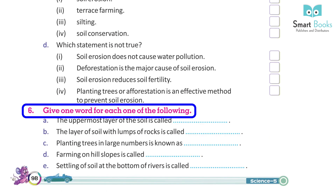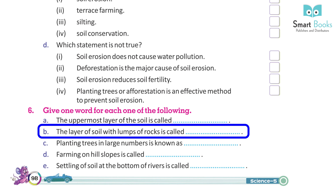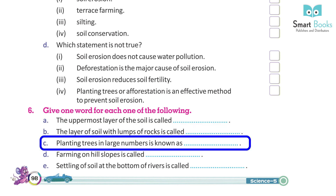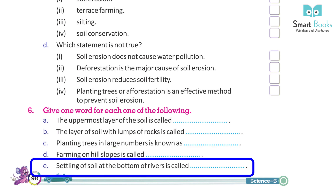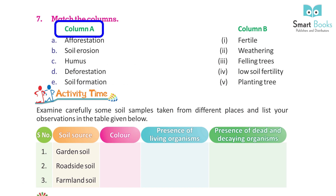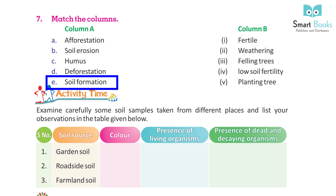Give one word for each of the following: A. The uppermost layer of the soil is called ___. B. The layer of soil with lumps of rocks is called ___. C. Planting trees in large numbers is known as ___. D. Farming on hill slopes is called ___. E. Settling of soil at the bottom of rivers is called ___. Match the columns: Column A — Afforestation, Soil erosion, Humus, Deforestation, Soil formation. Column B — 1. Fertile, 2. Weathering, 3. Felling trees, 4. Low soil fertility, 5. Planting trees.